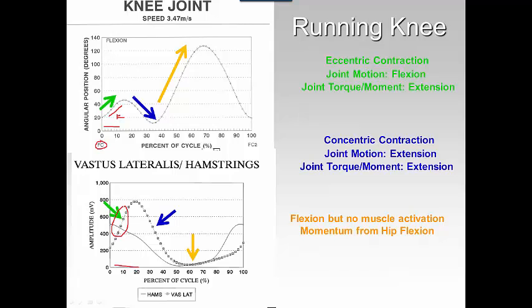As we extend the knee — the knee joint goes through extension — you're opposing gravity, it's a concentric contraction, and so the joint torque or moment must be extension. You still see those quads active up to about 35%. So quads: eccentrically, then concentrically — eccentric, concentric.